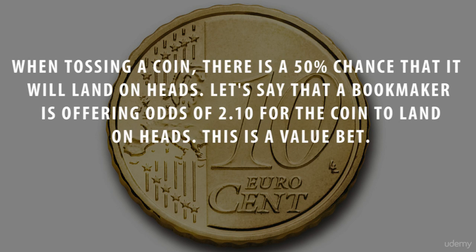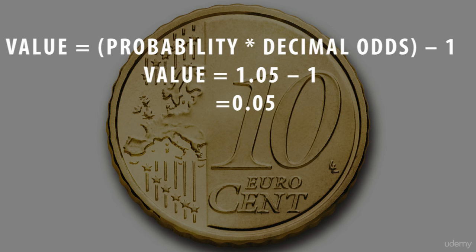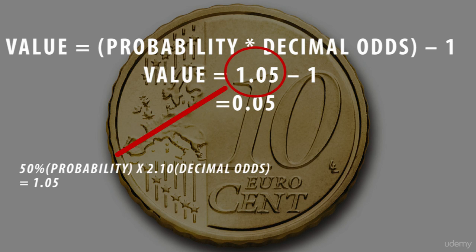Let's consider a coin toss. When tossing a coin, there is a 50% chance it will land on heads. Let's say a bookmaker is offering odds of 2.1 for the coin to land on heads — this is a value bet. Betting on the coin to land on heads at odds of 2.1 is a value bet, and this is how we calculate a value bet.